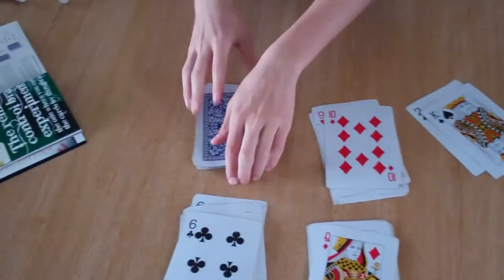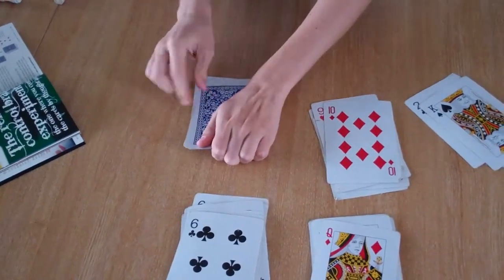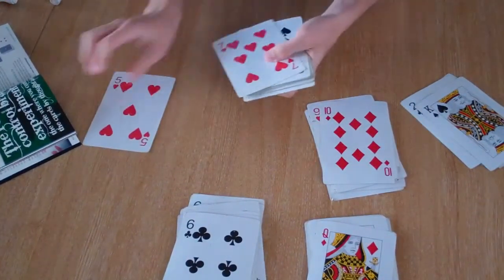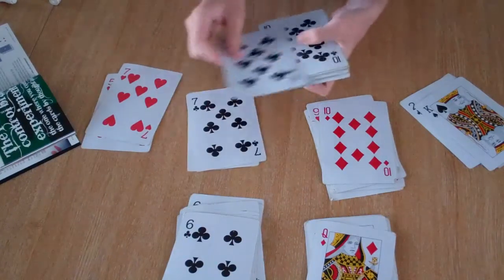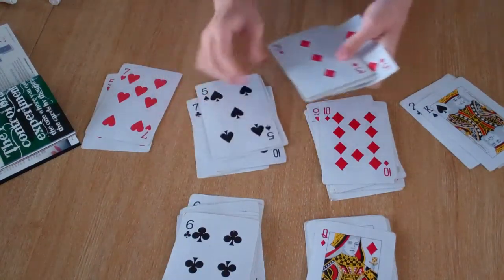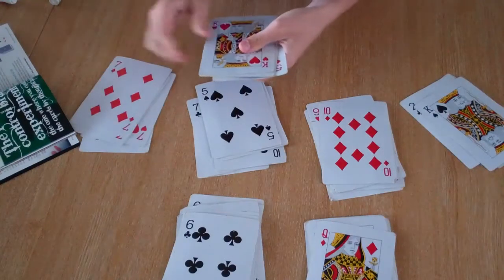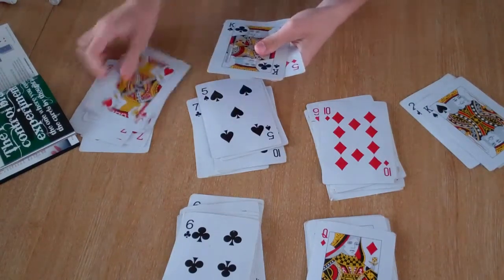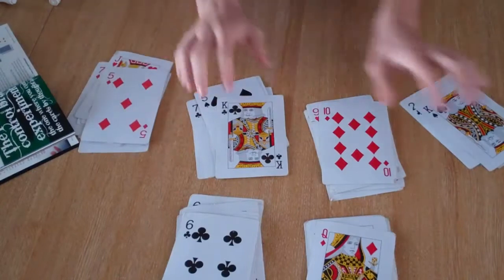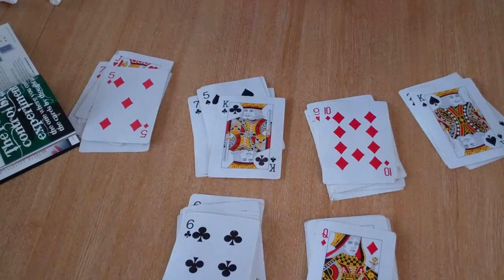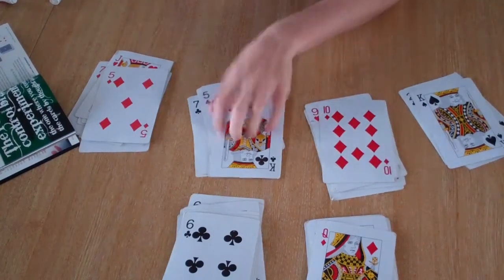So in here there should also be seven blacks. Let's see. One black, two black, three black, four black, five black, six black, seven black. And now you have influenced the cards having the same amount of reds and black.